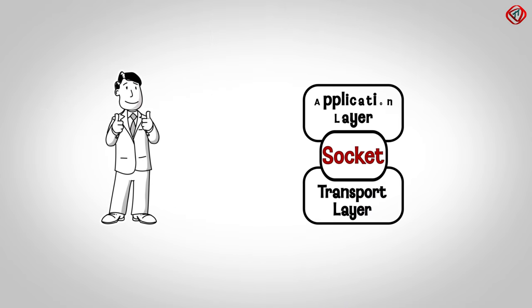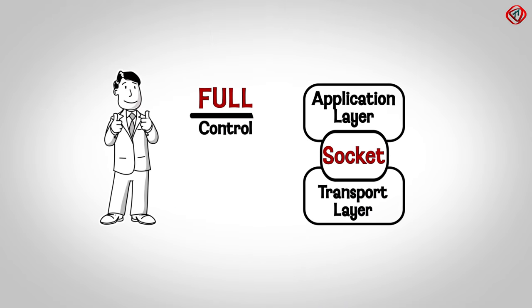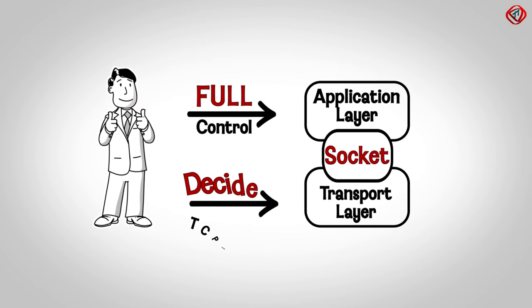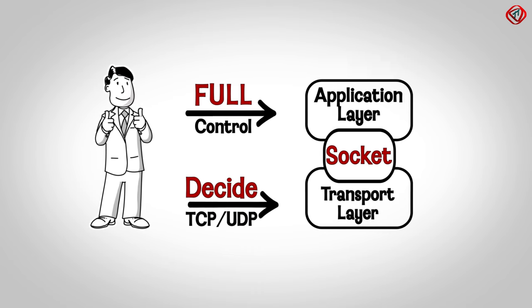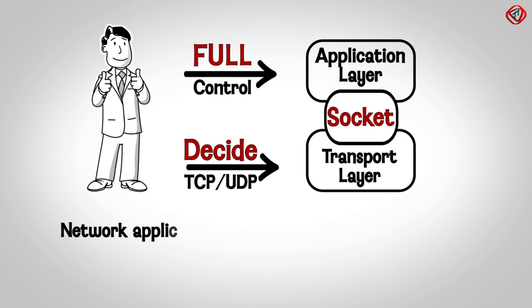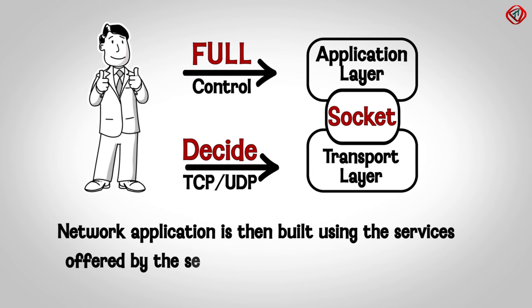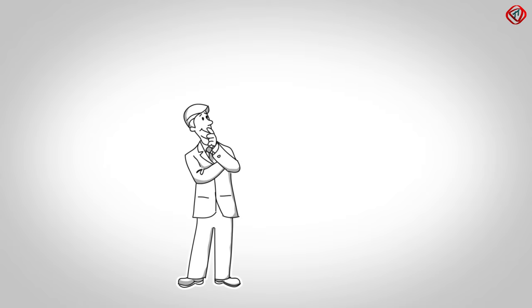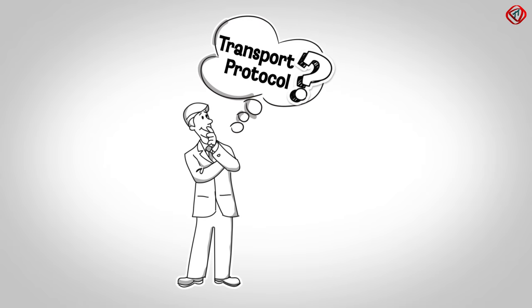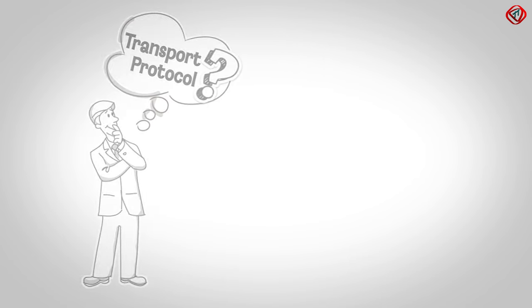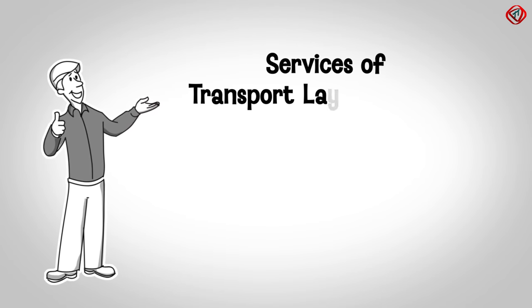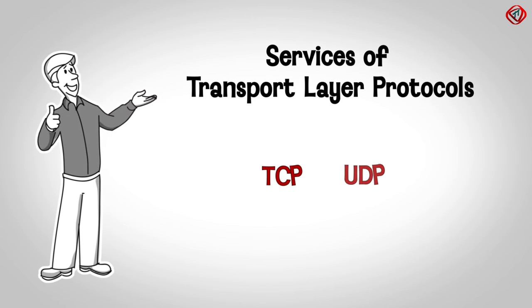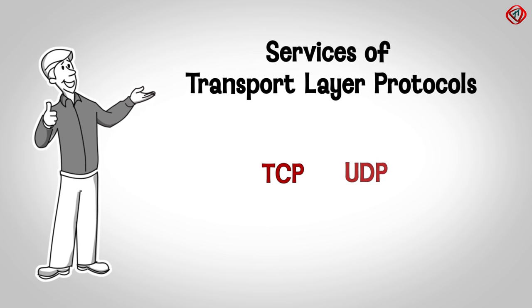The application developer has full control of the socket on the application layer side. On the transport layer side, the application developer can control the transport protocol to be used — for example TCP or UDP. The network application is then built using the services provided by the selected transport layer protocol. An application developer decides which transport protocol to use by studying the services provided by the transport layer protocols and picking the one whose services best match the network application's needs.